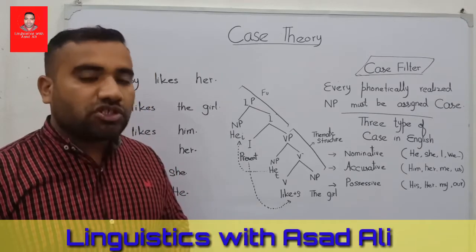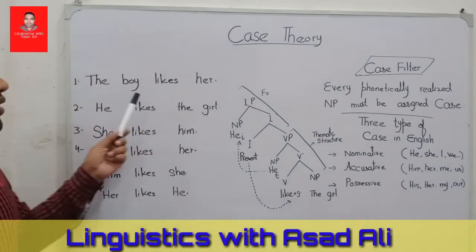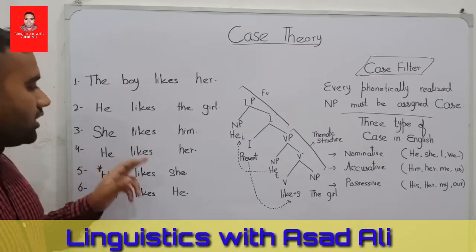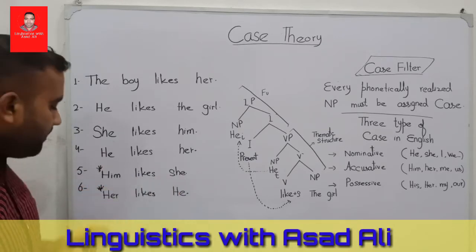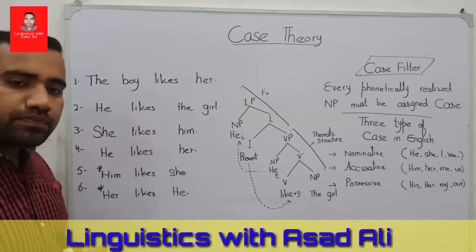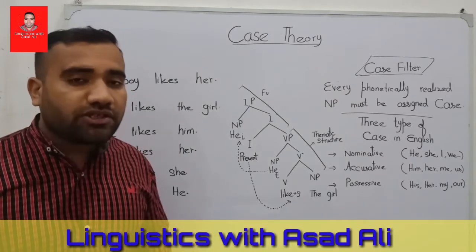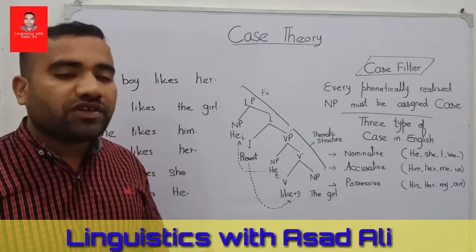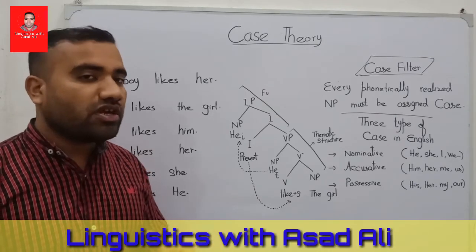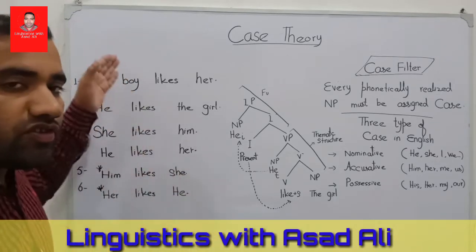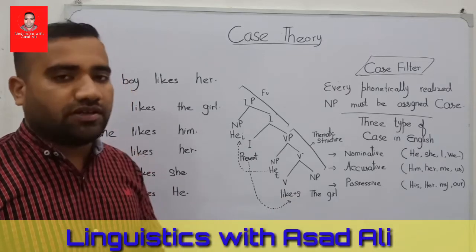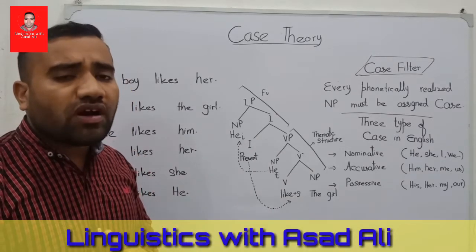In the English language we have sentences like: 'the boy likes her,' 'he likes the girl,' 'she likes him,' 'he likes her.' But also: 'him likes she,' 'her likes he.' After reading all these sentences, any speaker of English can judge what sentences are grammatical and what sentences are ungrammatical.